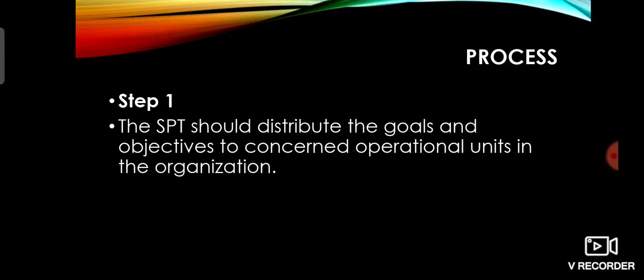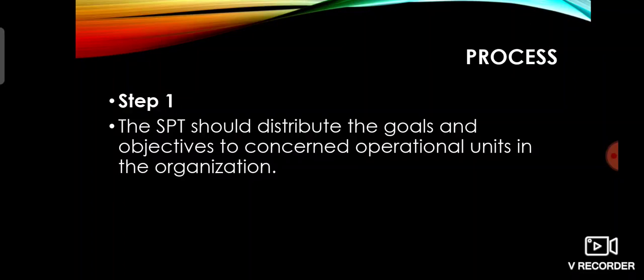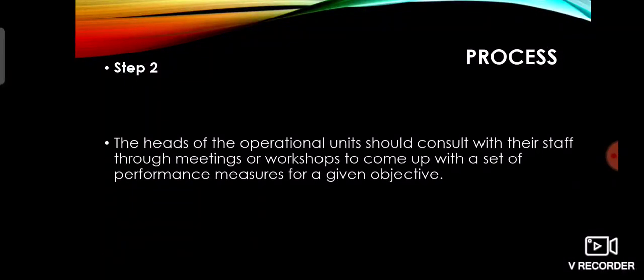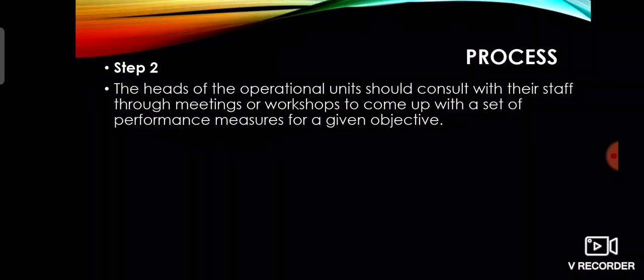The process: the first step is that the strategic planning team should distribute the goals and objectives to concerned operational units in the organization — disseminating information to different departments. That is the very first step in creating a performance measure. Secondly, the heads of operational units should consult with their staff through meetings or workshops to come up with a set of performance measures for a given objective.